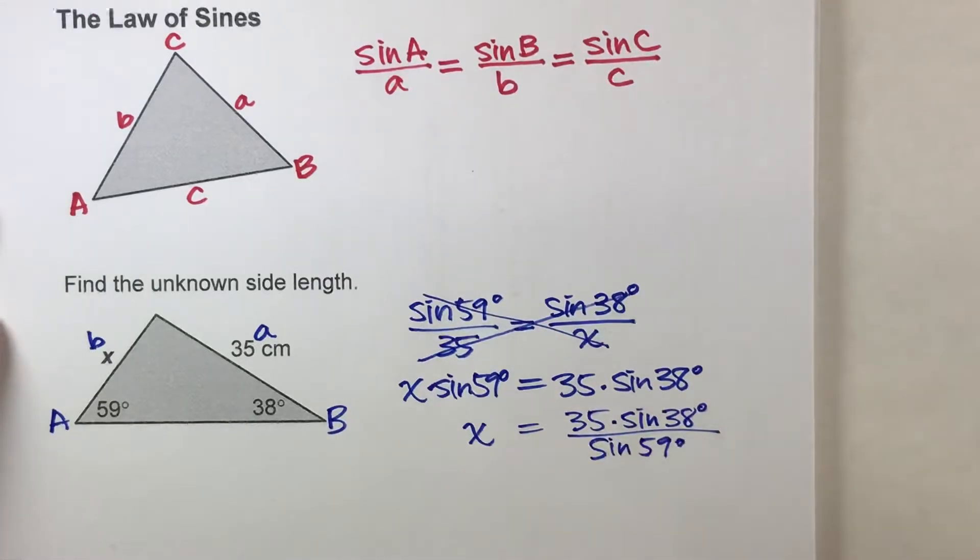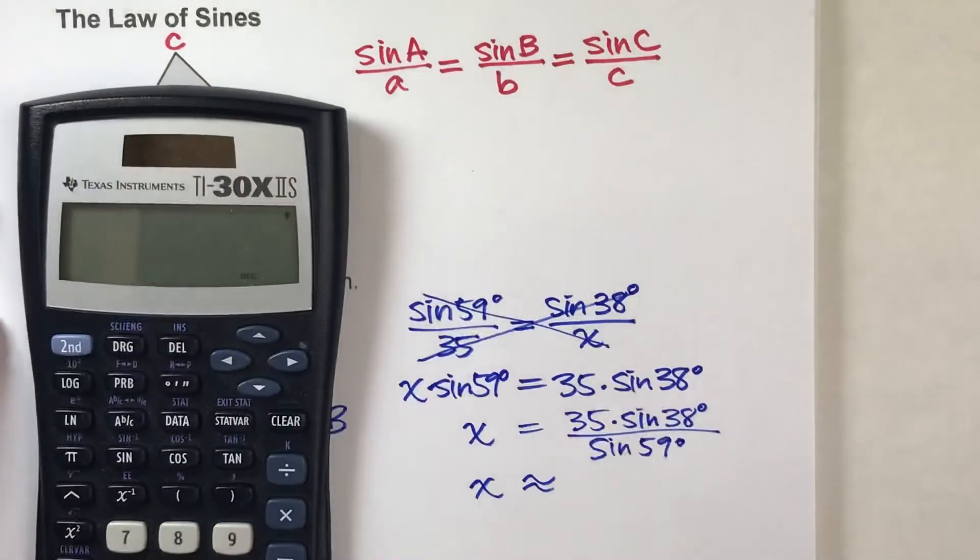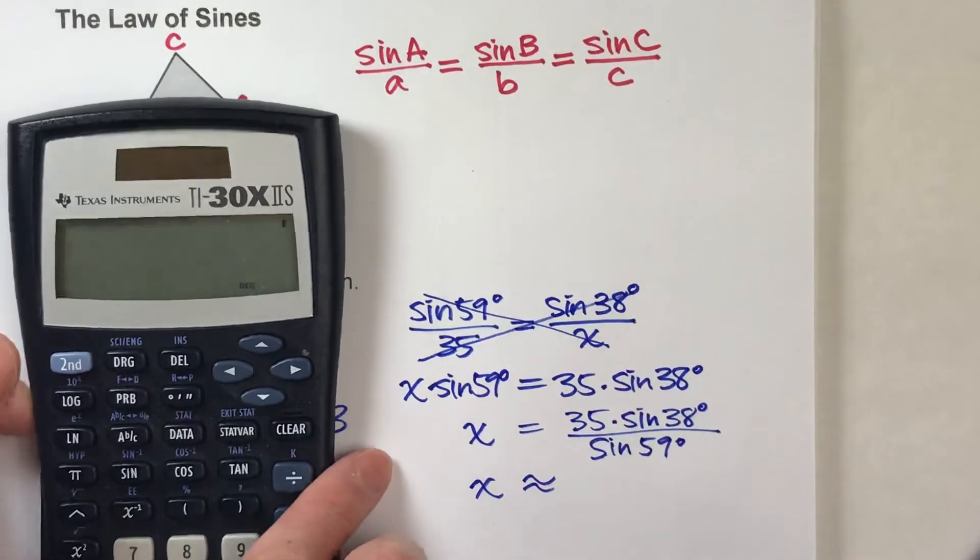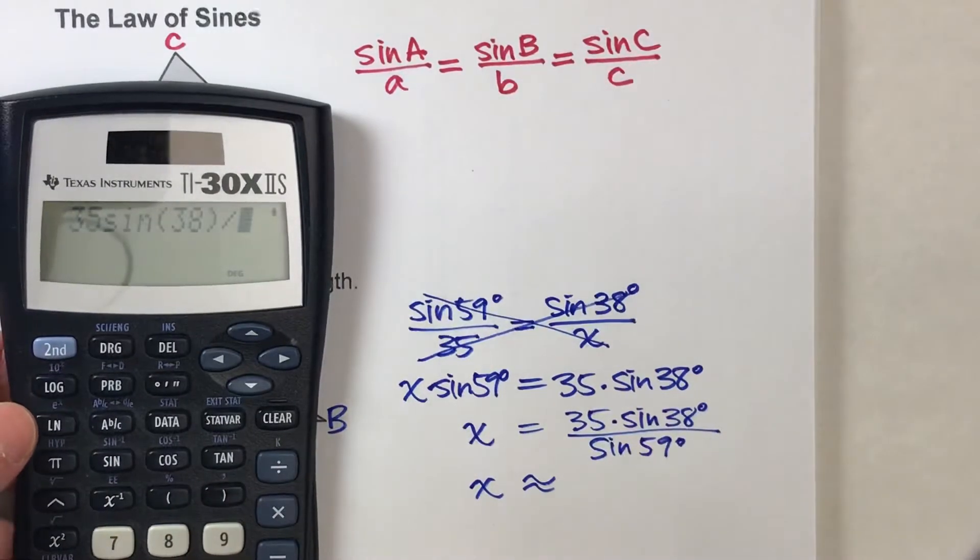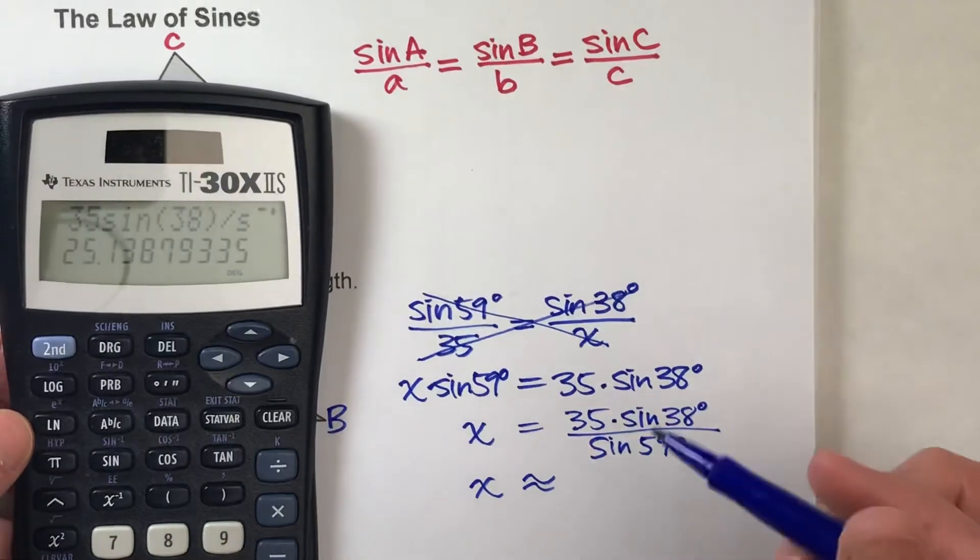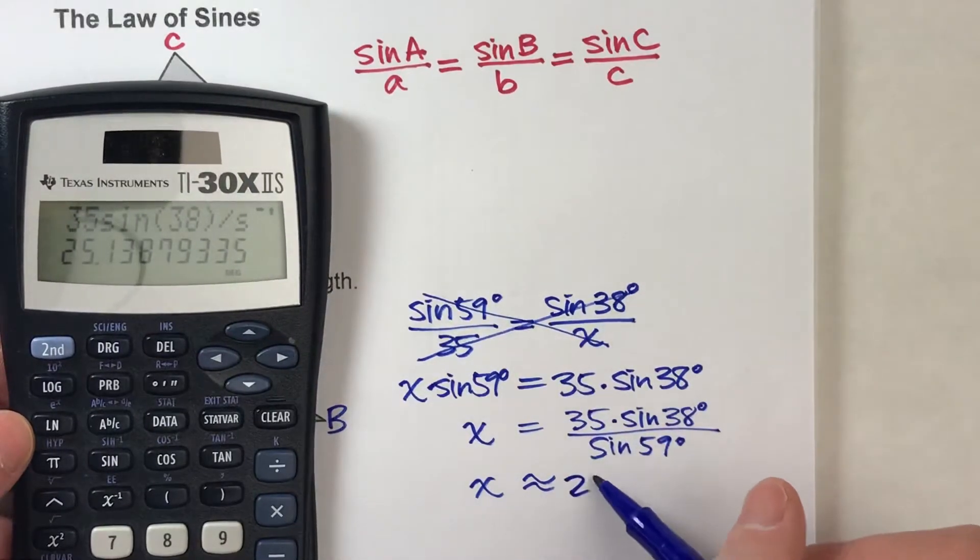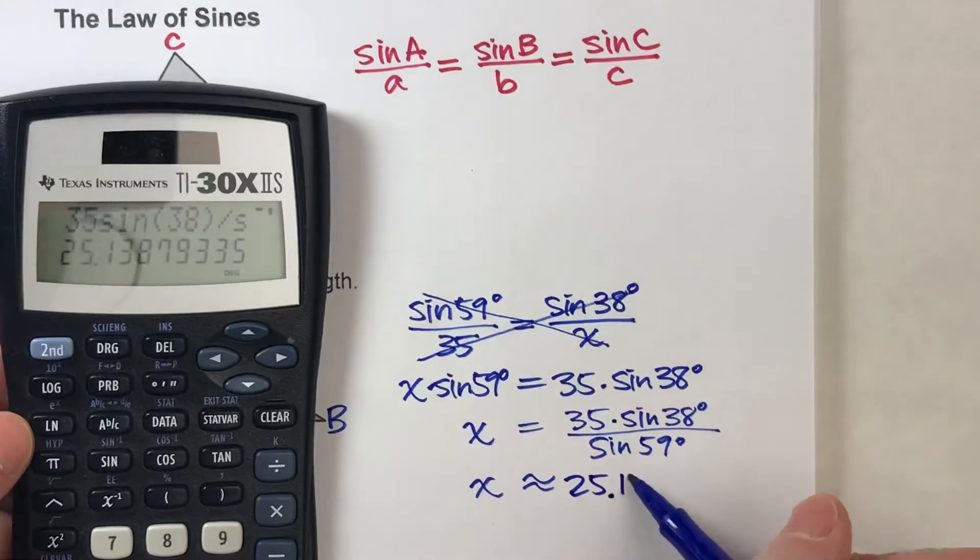So at this point, this just becomes calculator work. So pull out your little scientific calculator here. 35 times the sine of 38 degrees divided by the sine of 59 degrees. Boom. I get about 25, let's go to the hundredths, 25.14.